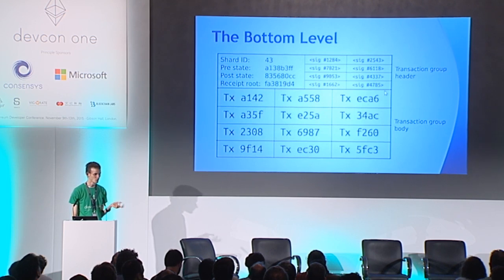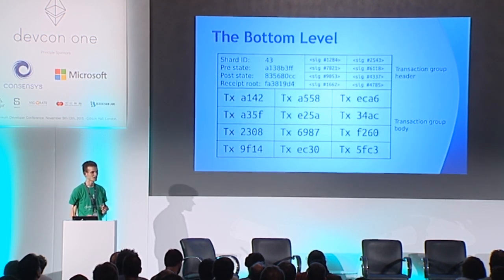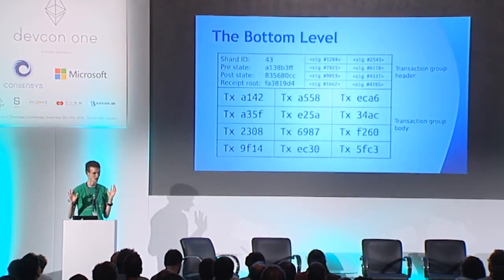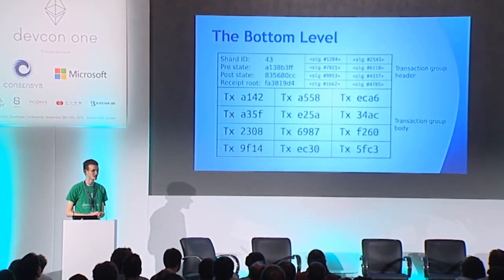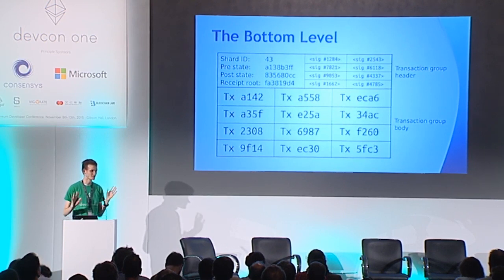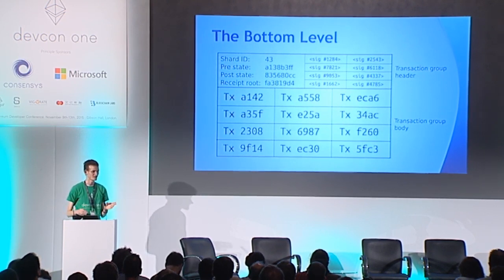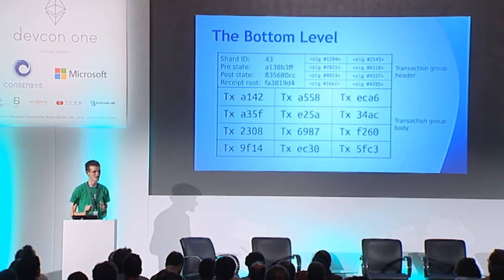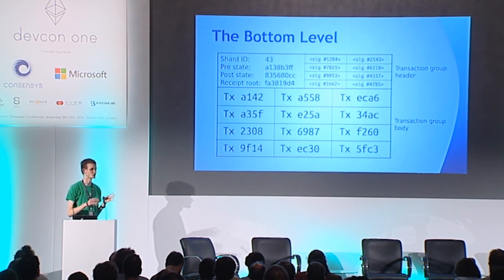In order for this header to be valid, it has to be validated by a randomly selected global sample of validators. You'll have some number — say 400 or 1,000 — of validator IDs inside the entire system. These don't even need to be the same validators as the ones that maintain the top-level consensus.